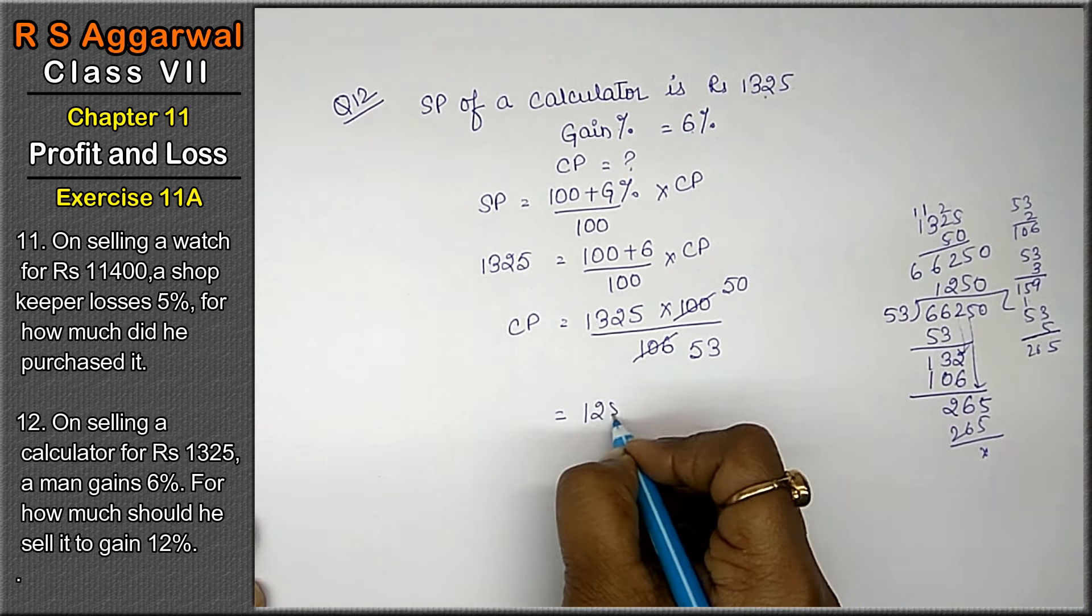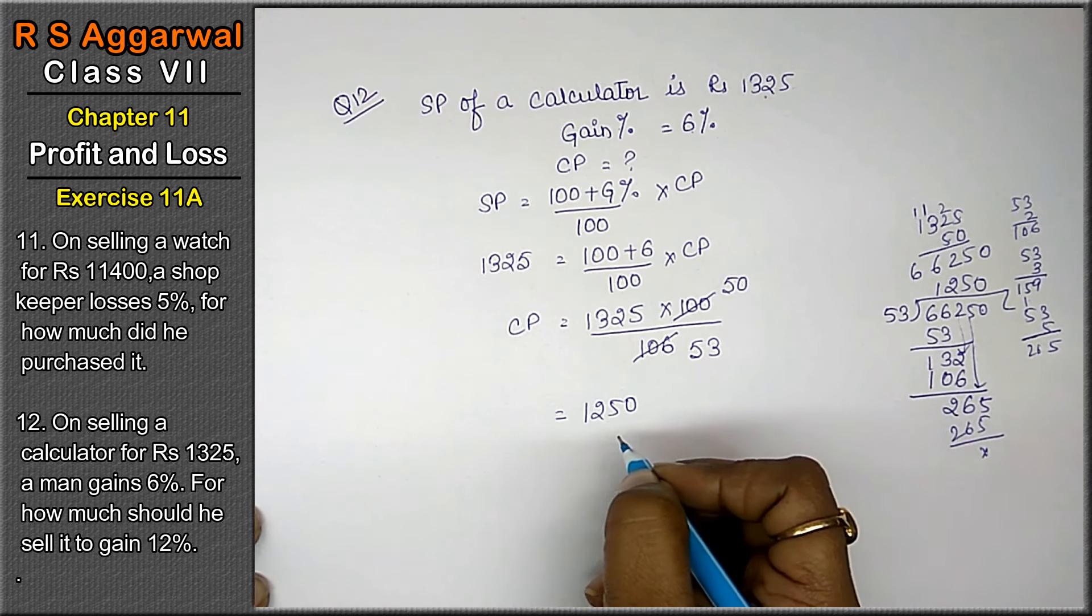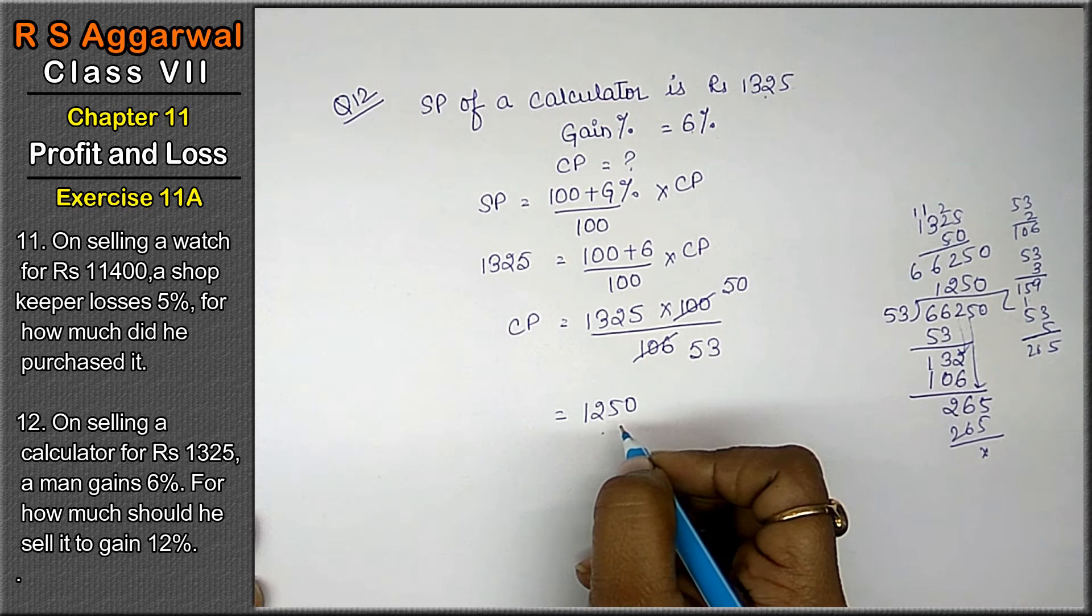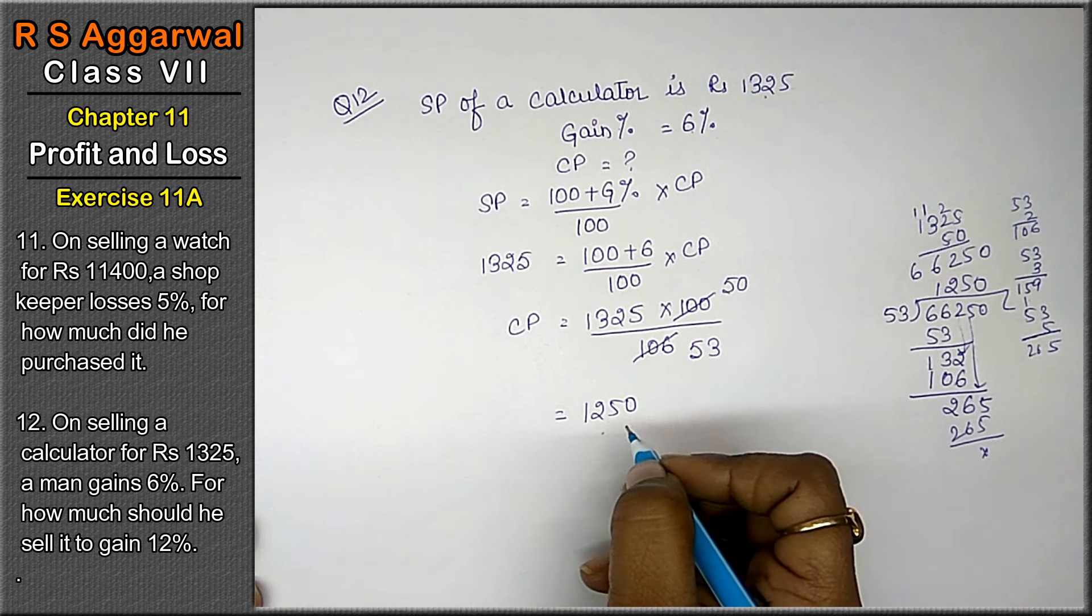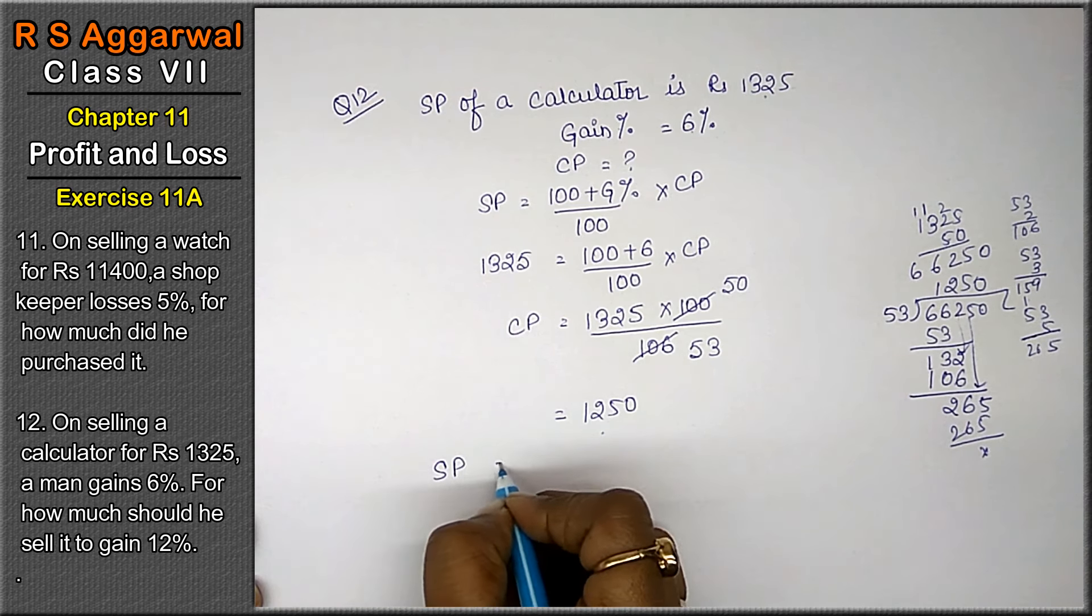The cost price is 1,250. If we have to sell it at 12% gain, then what will be our selling price? The selling price formula: SP = (100 plus gain percent) upon 100 into CP.